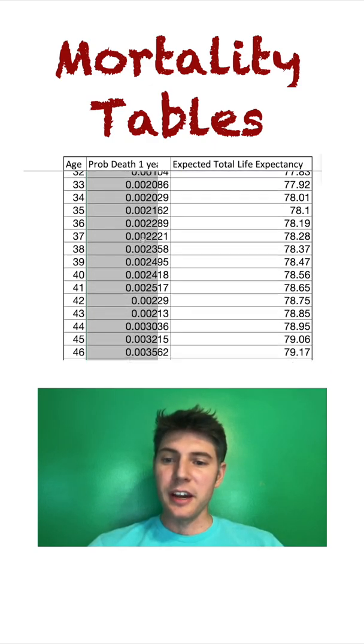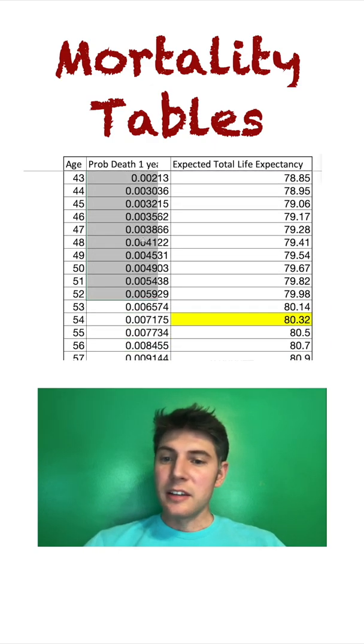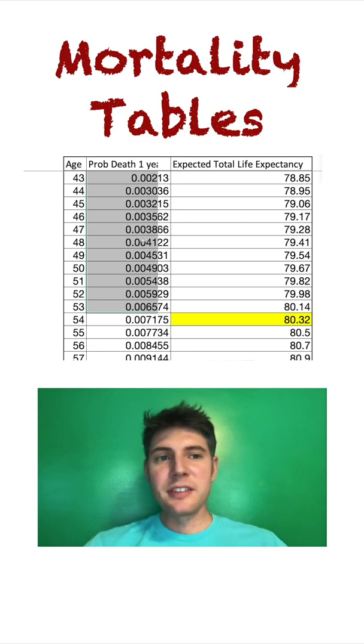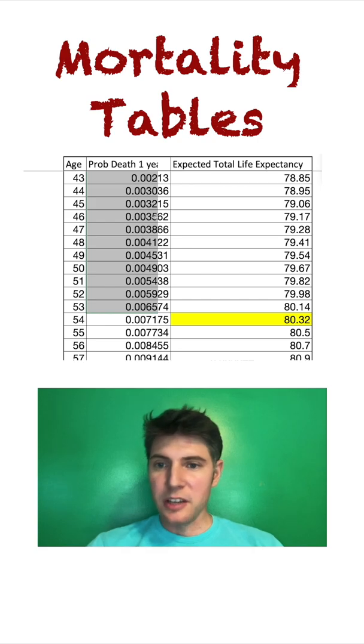So the table's figuring out that some 24 year olds are going to die before then, and that brings down the expected life expectancy for 24 year olds on average.